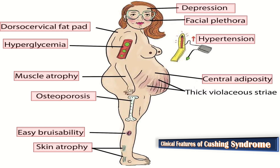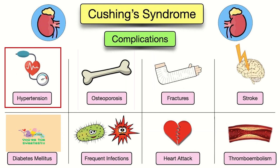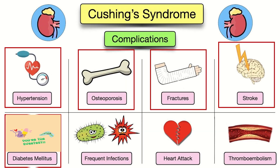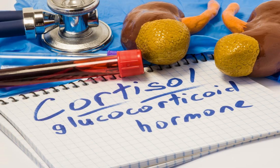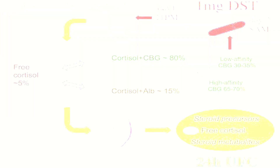Additional features include central adiposity and thick violaceous striae. The complications of Cushing syndrome include hypertension, osteoporosis, fractures, stroke, diabetes mellitus, frequent infarctions, heart attack, and thromboembolism.